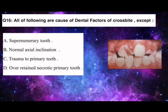Q16. All of the following are causes of dental factors of crossbite, except: A. Supernumerary tooth. B. Normal axial inclination. C. Trauma to primary teeth. D. Over-retained necrotic primary tooth.